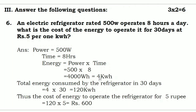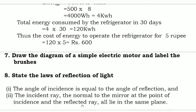For 30 days: 4 × 30 = 120 kilowatt-hours. The total energy consumed for one month is 120 kWh. The cost of one kilowatt-hour is given as 5 rupees, so the cost of 120 kWh = 120 × 5 = rupees 600. Therefore, the total cost of energy to operate the refrigerator for 30 days is rupees 600. Solving this way will earn you two marks.